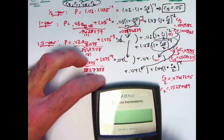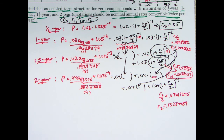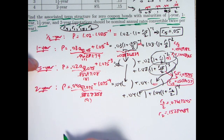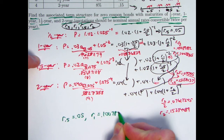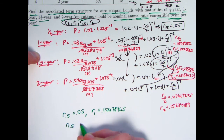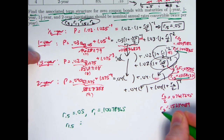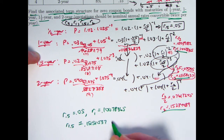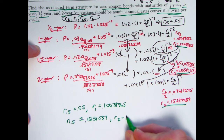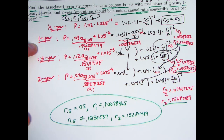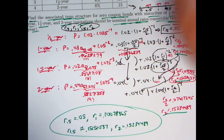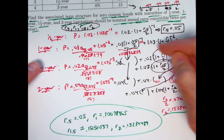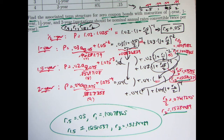For the final answers — the term structure found for zero coupon bonds: R.5 = 0.05, R1 = 0.10078365, R1.5 = 0.15151037, and R2 = 0.15234489. If you round these you'll get the answers in the back of the book. That was an extensive tour de force of calculator usage, storing values in registers 4, 5, 7, 8, and 9, but hopefully you got a lot of ideas about both the method and calculator usage.